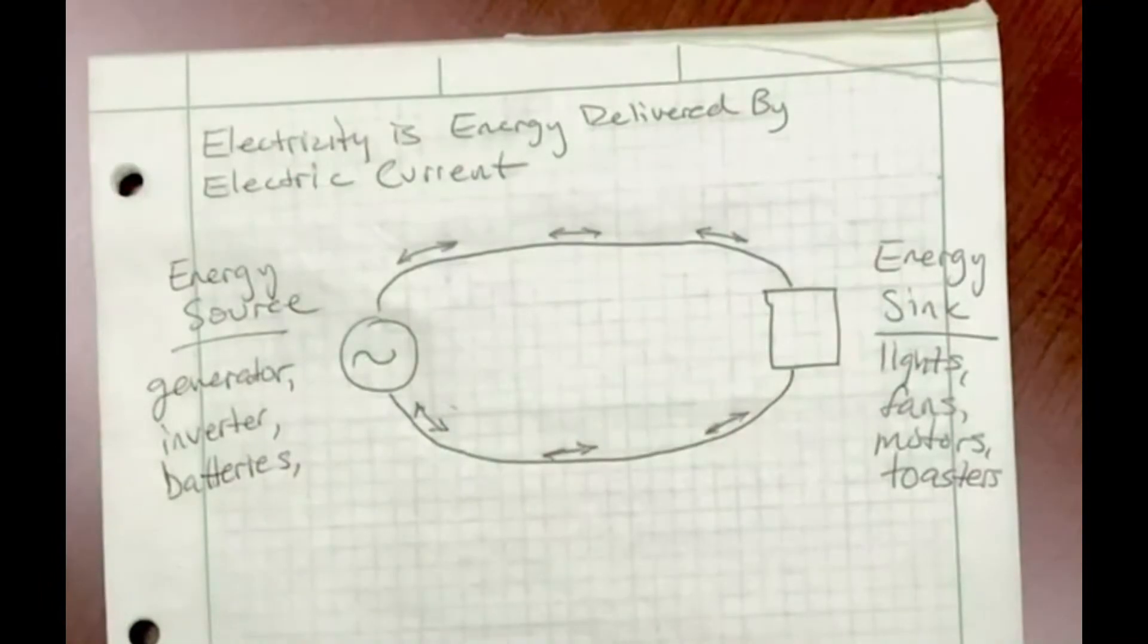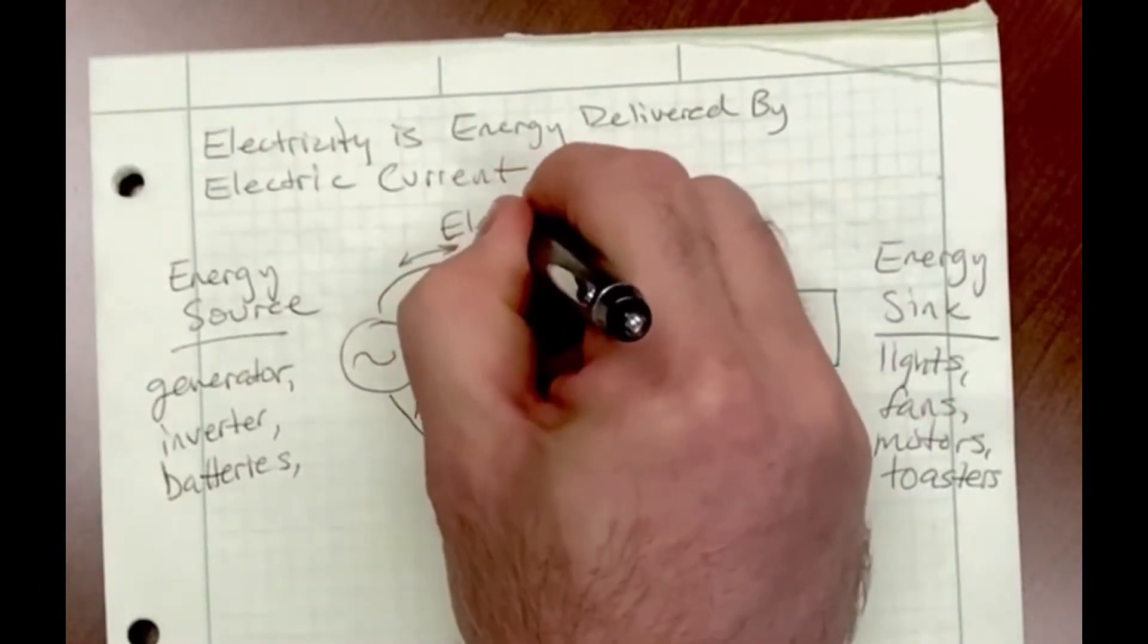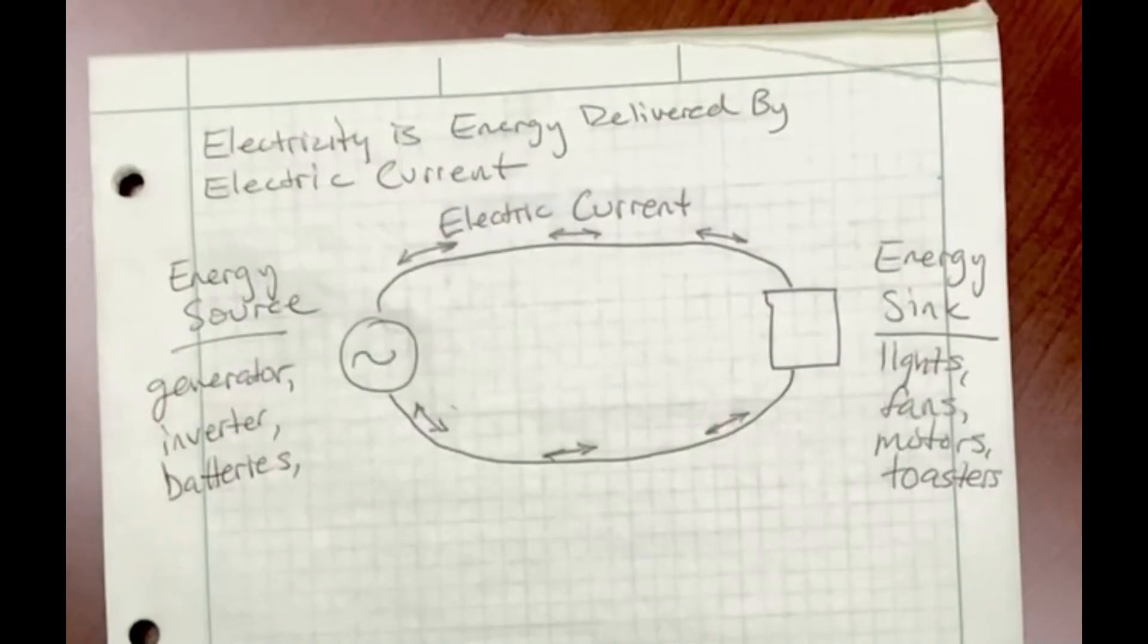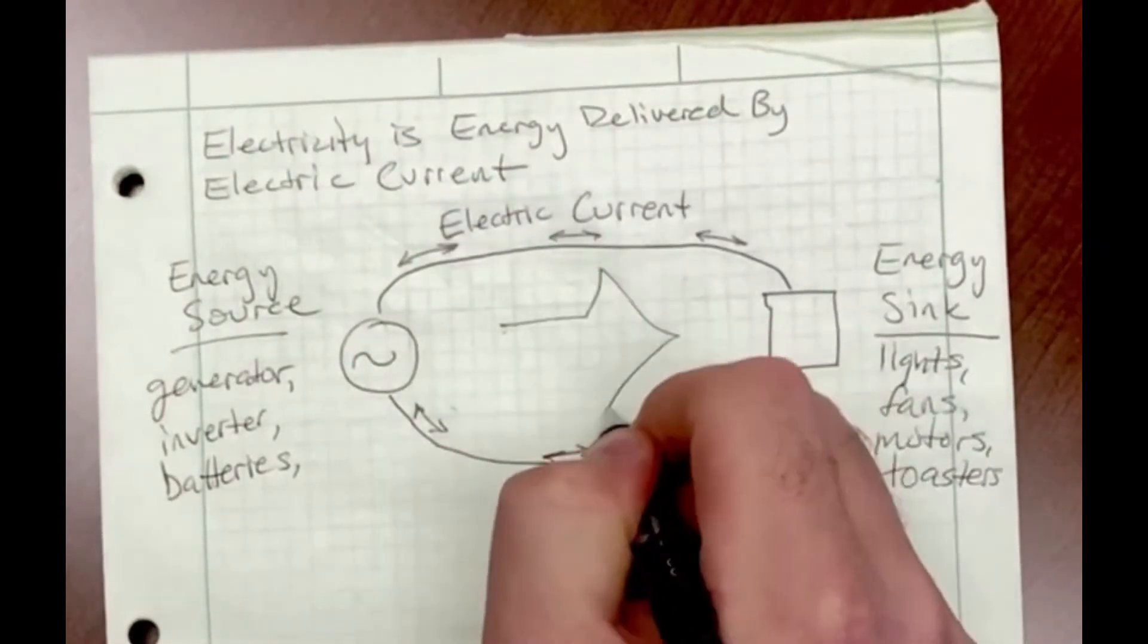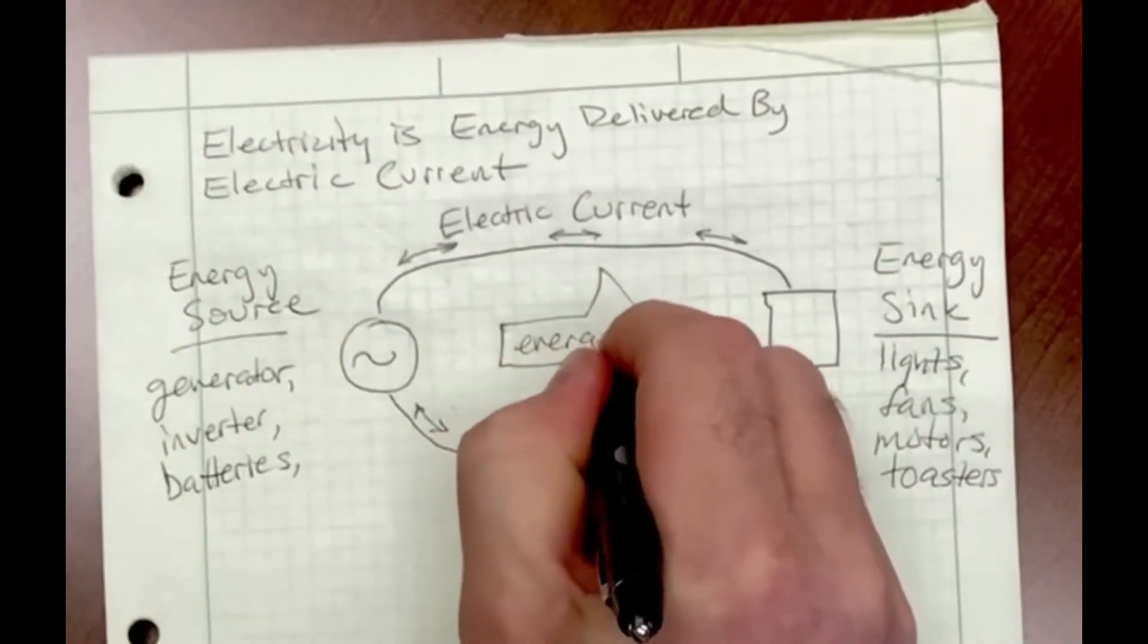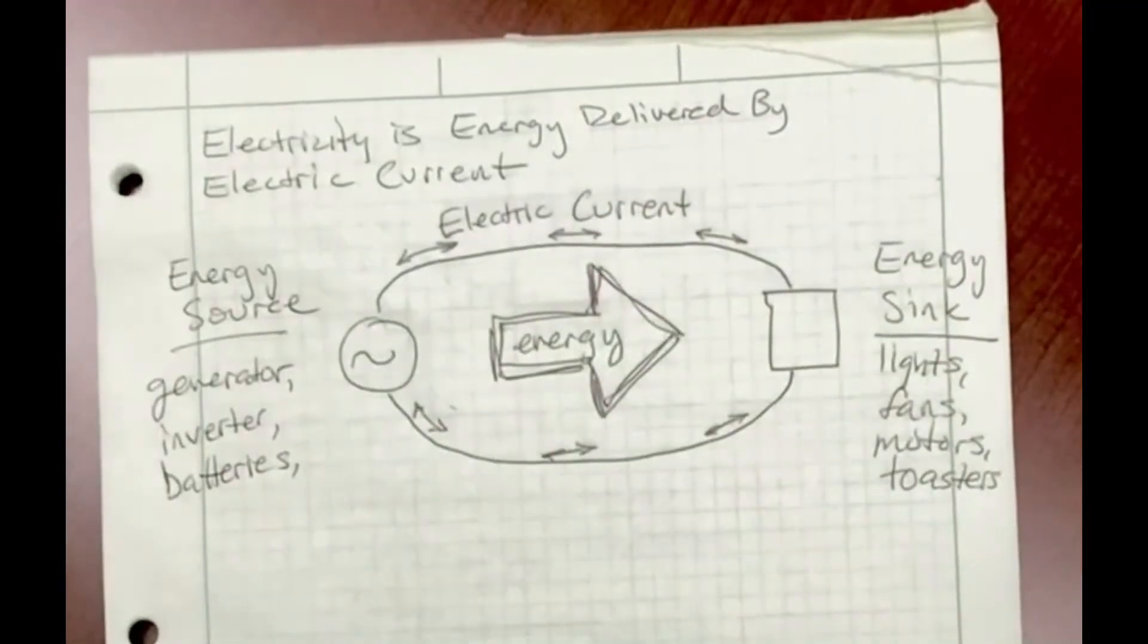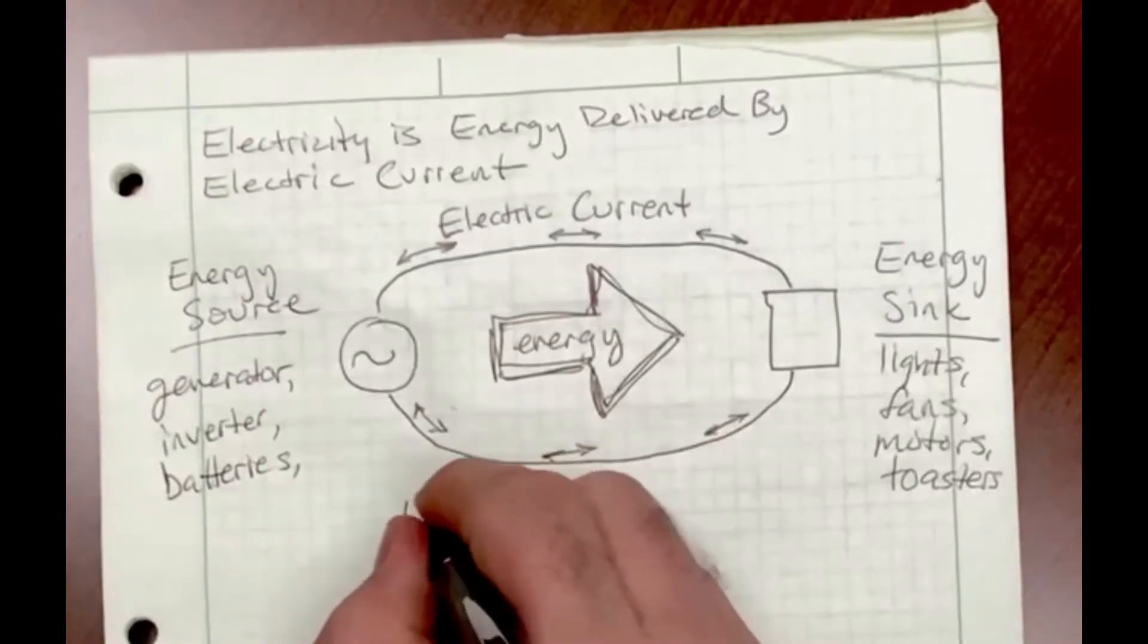We're going to be talking about AC. The electric current goes back and forth and changes directions in North America 60 times per second. Even though the current is going back and forth, the energy is being delivered from the source to the sink in a one-way direction.